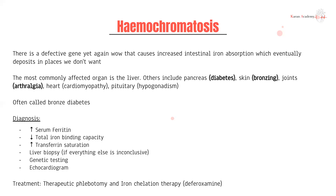If everything else is inconclusive, you can do a liver biopsy and stain for iron, as well as genetic testing. You'd also want to do an echocardiogram to assess for cardiomyopathy and iron deposition, and to check for heart failure and arrhythmias, which are the common cardiac manifestations of hemochromatosis.